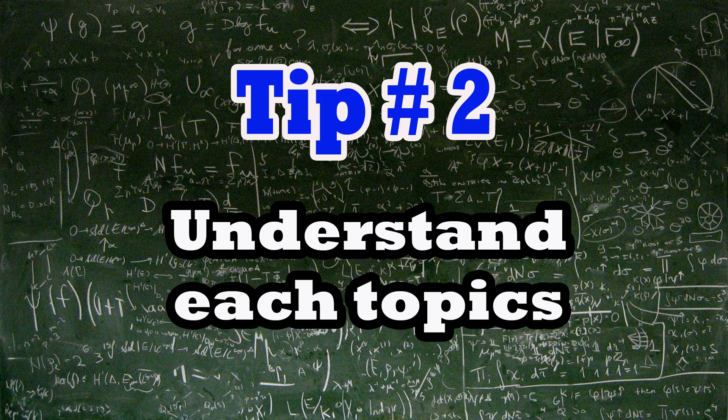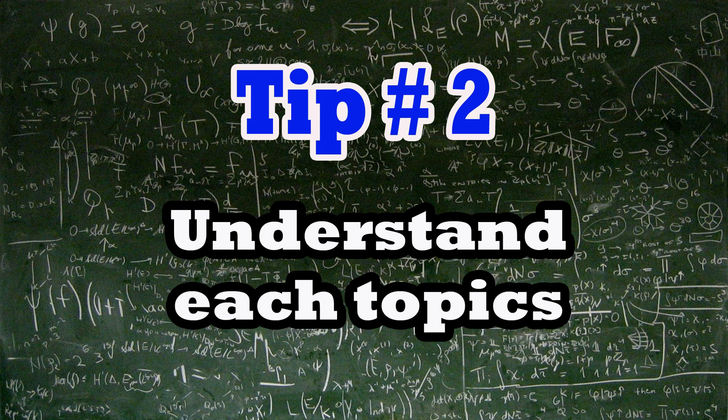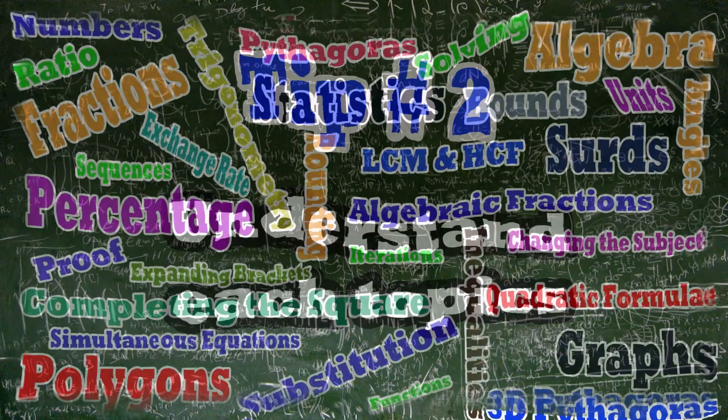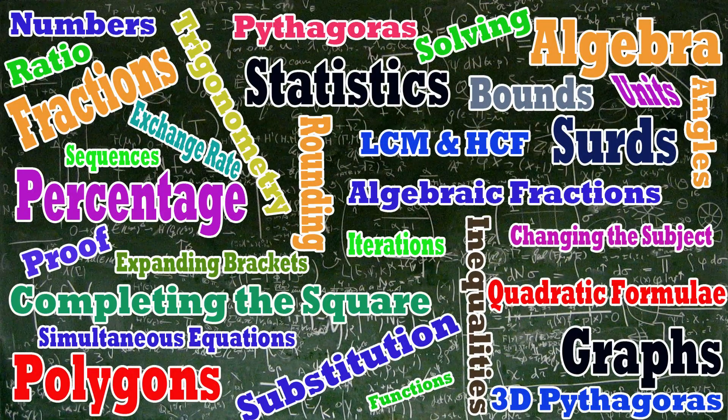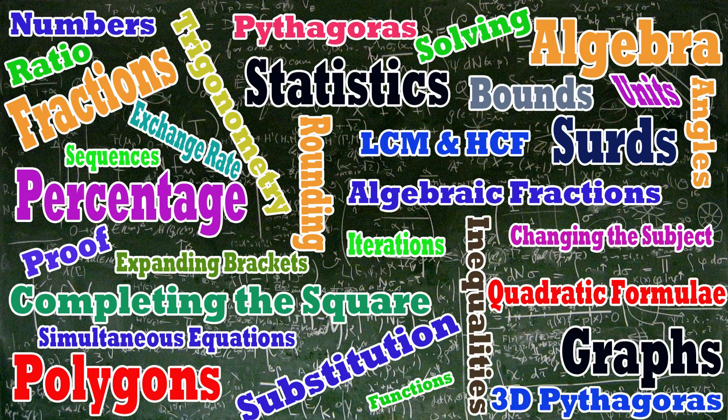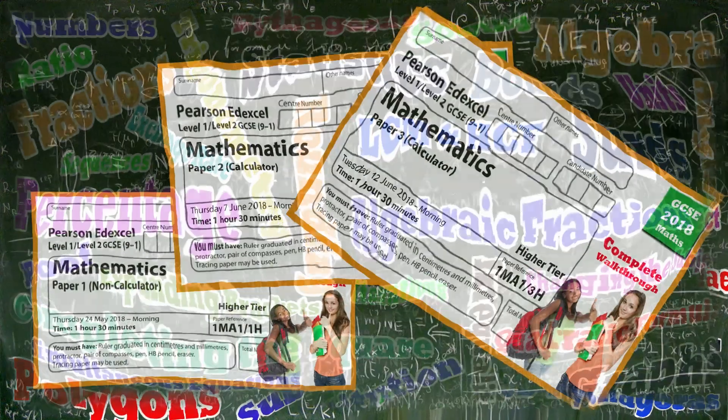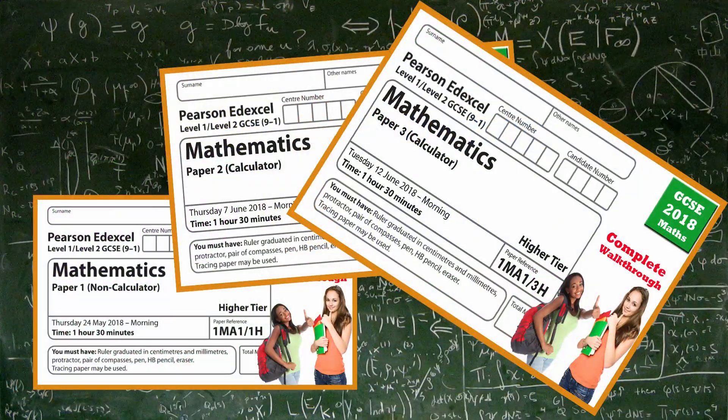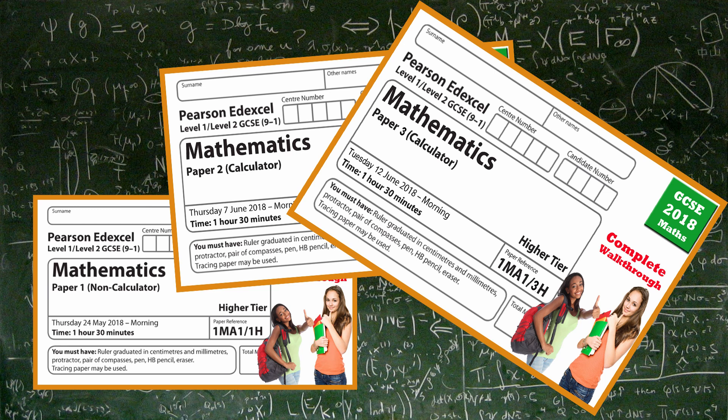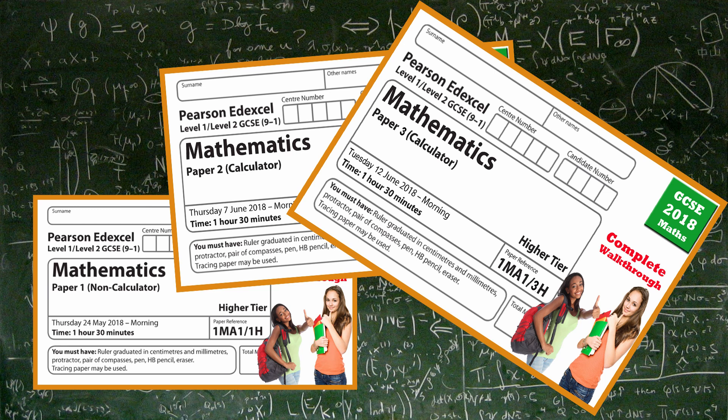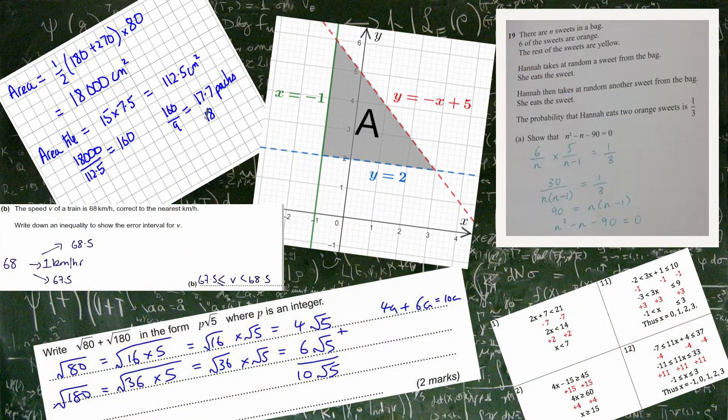Tip number 2: Understand each topics. What we mean by this is, for GCSE maths, you have nearly 90 subtopics which you want to understand clearly. This covers level 1 to 9. As you are aware that according to the new specification, there are two calculator papers and one non-calculator paper. Nearly covering almost every single subtopics. So, you need to know the methods for each topics.